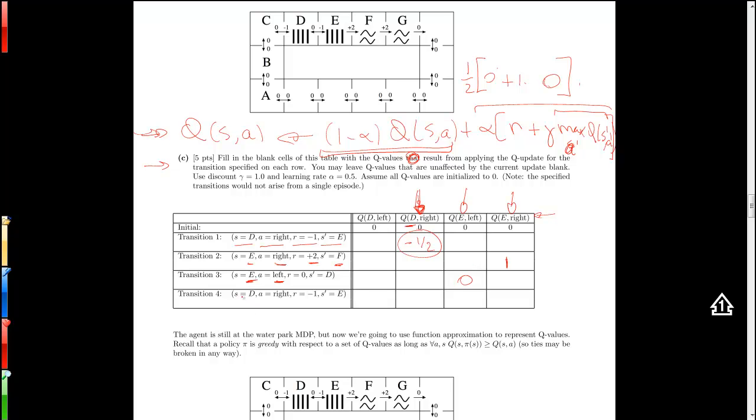Now for the last one, we start with D, the direction is right, that's the one here again. We want minus 1, landing in state E. So now we're going to update for a state-action pair where we have done an update before. So in this case, this first term is going to be 1 minus alpha, which is 1 minus 0.5, which is 0.5. And Q(S,A), which is D right, which is minus 0.5.